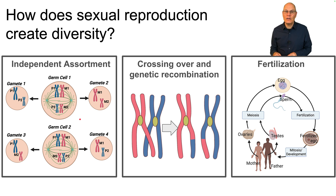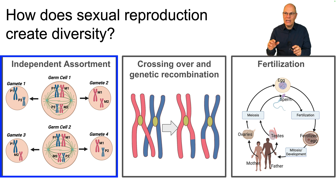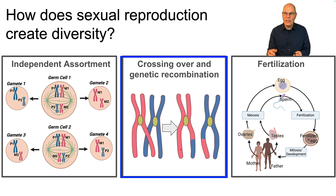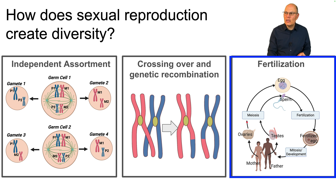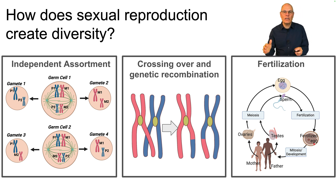How does sexual reproduction create diversity? One engine is independent assortment, which randomly arrays different combinations of chromosomes in the gametes. The other engine is crossing over and genetic recombination, which creates uniquely recombinant chromosomes. And then finally there's fertilization, where sperm and egg from different individuals combine in a fertilized egg — that is the third generator. That's why sexual reproduction creates diversity; it explains you and it explains me.